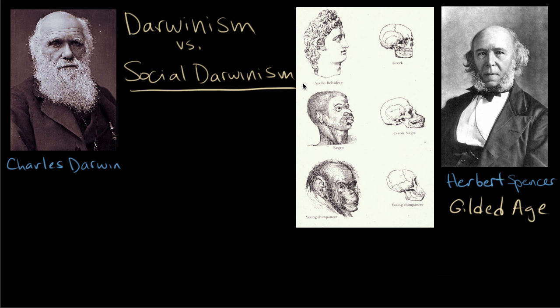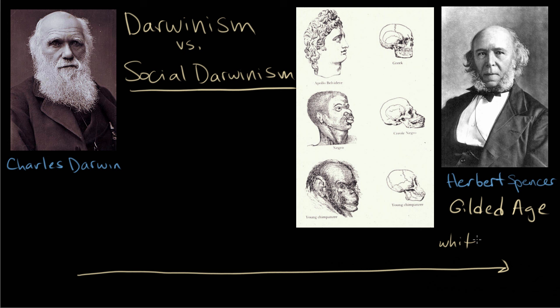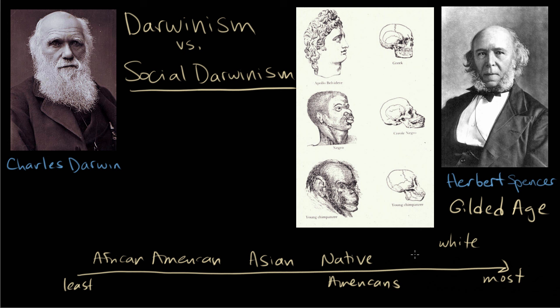Social Darwinism wasn't so much an actual form of biology as it was a misinterpretation of how natural selection and the theory of evolution worked — one that was used to justify or explain a lot of the social inequalities of this time period. The way people often thought about it was that white Anglo-Saxon people, so Northern Europeans, were the most evolved, on a timeline from least evolved to most evolved. And people like African Americans, Asians, Native Americans, or even Eastern Europeans were considered less evolved — that they hadn't come as far as Anglo-Saxons.